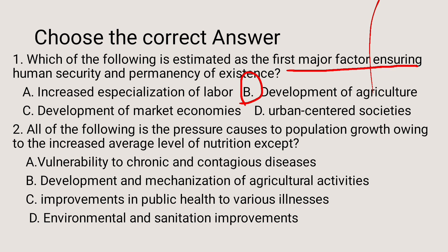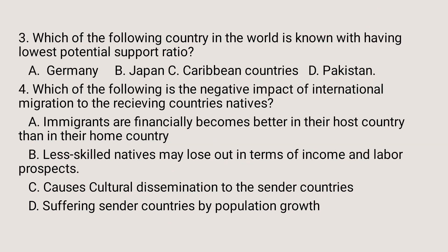The answer is A. Vulnerability to chronic and contagious diseases is the exception. Since there are nutritional supplies, there should not be vulnerability to chronic and contagious diseases — there is opportunity to be cured from a disease. Because here there is nutritional supply.